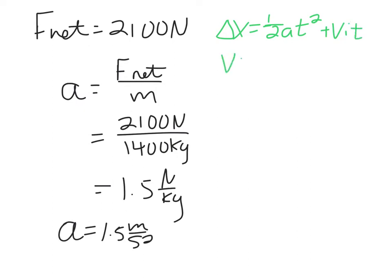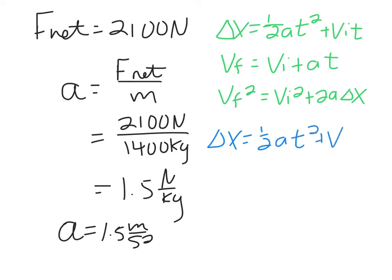The second one is v final equals v initial plus a t. And the third one, v final squared equals v initial squared plus 2 a delta x. Based on what we're given, in this case we have acceleration, we have v initial, and we have delta x. Looking for time, we want to use this equation. So delta x equals one half a t squared plus v initial t.